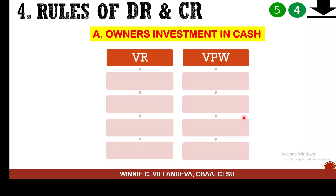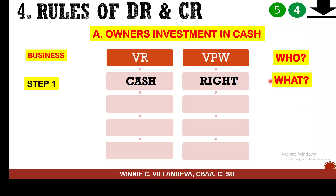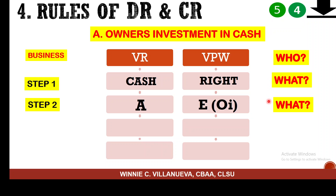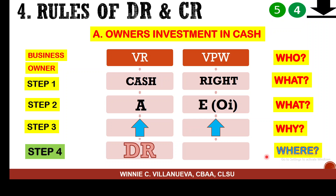Our first sample is owner's investment. The business receives cash — you're given the right of ownership. What is affected is your asset as well as your equity — the original investment. Both will be increased, so you will debit and credit. When your asset increases, it has to be debited; and when your equity increases in the form of original investment, it has to be credited.